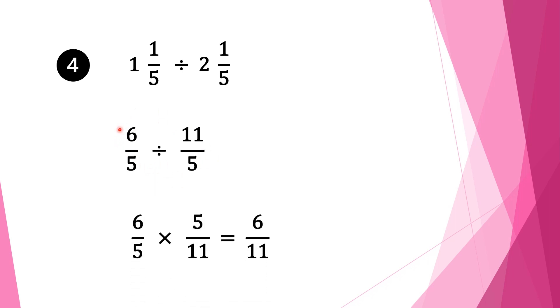Now we have a normal fraction division. We keep the first fraction 6 over 5 as it is, change the division sign into multiplication, and take the reciprocal of the second fraction. It is 11 over 5, so we write it down as 5 over 11. We check whether we can cancel anything — we can cancel 5 and 5. So 5 goes into 5 once. We multiply our numerators: 1 times 6 is 6, and 11 times 1 is 11. So our final solution is 6 over 11.